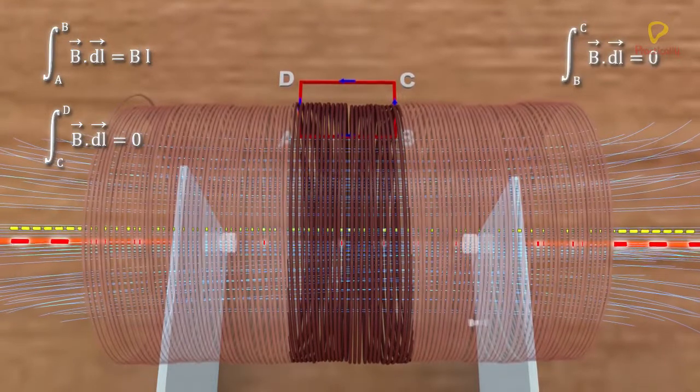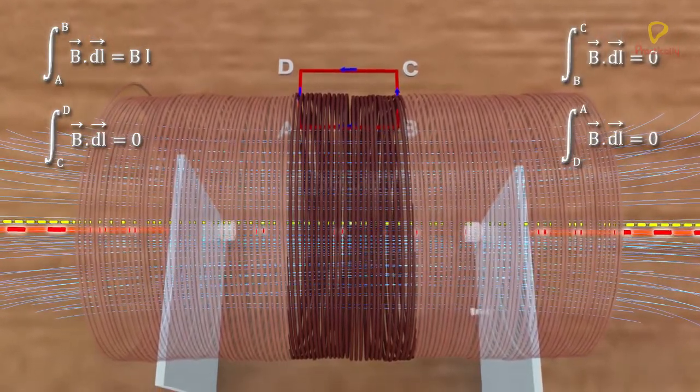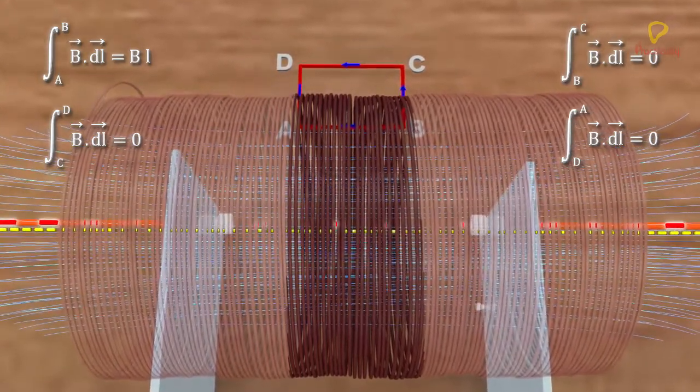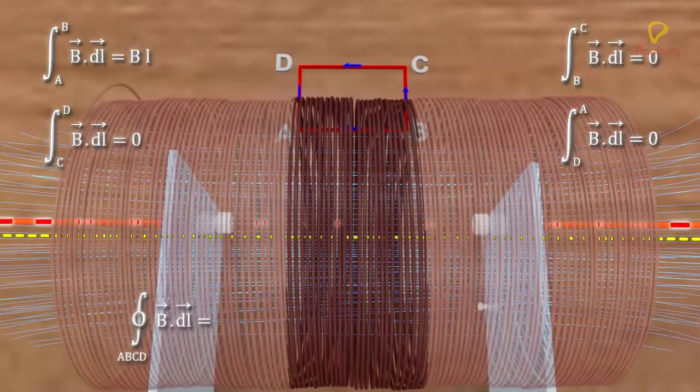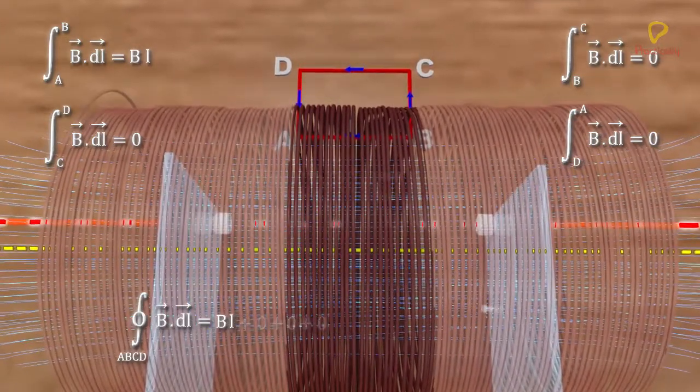BC and DA are perpendicular to the magnetic field. So, their contribution to the line integral is nil. Hence, integral B dot dL around ABCD is B into L.